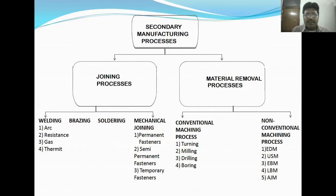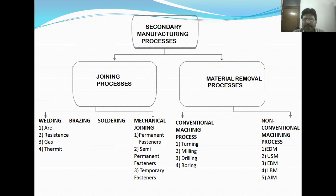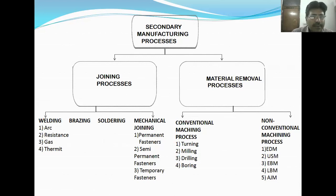After primary manufacturing processes, we come to secondary manufacturing processes. Secondary manufacturing processes are broadly divided into two parts: joining processes and material removal processes. Joining processes involve joining two parts or components to give final shape and size. Material removal processes are processes in which material is removed bit by bit in the form of chips from a raw material.